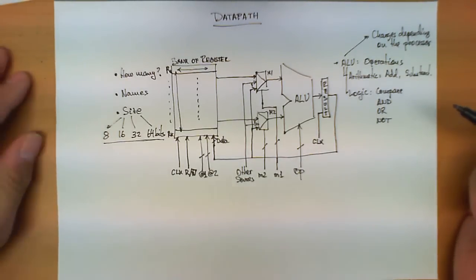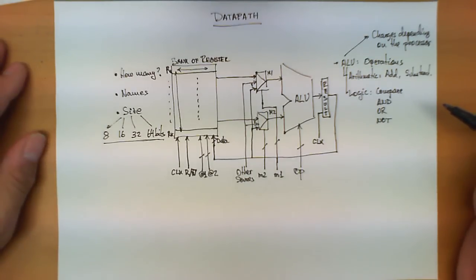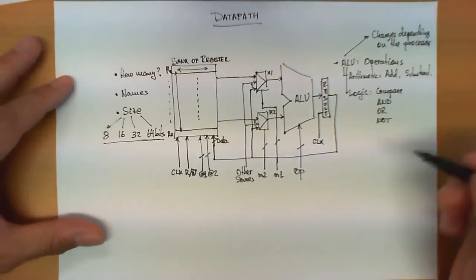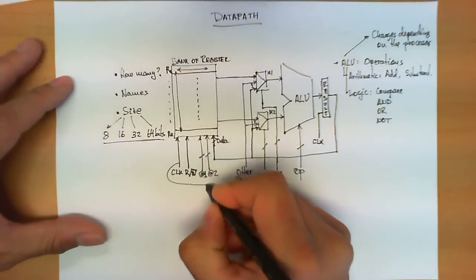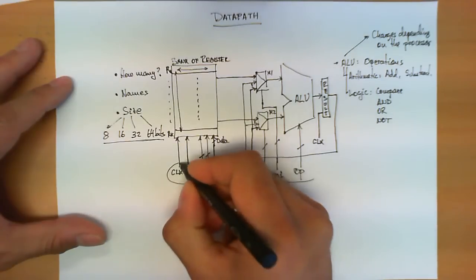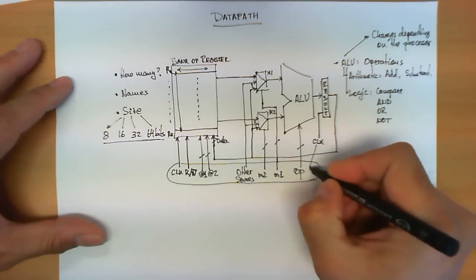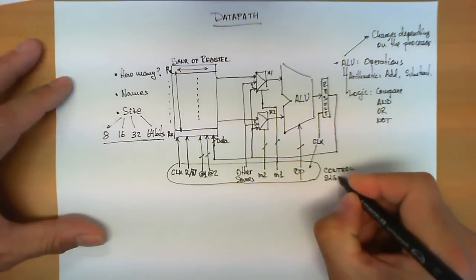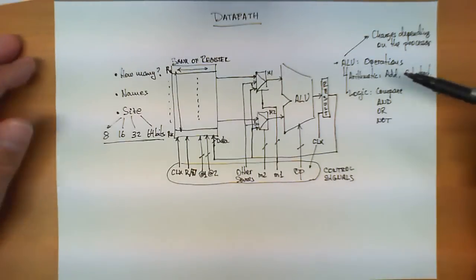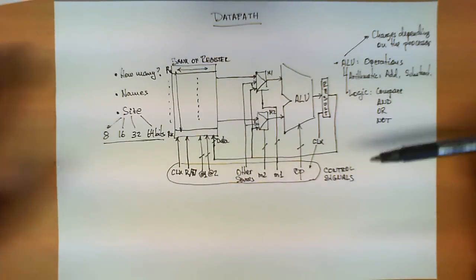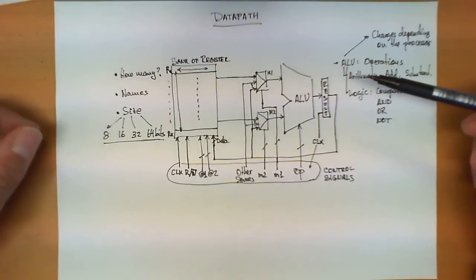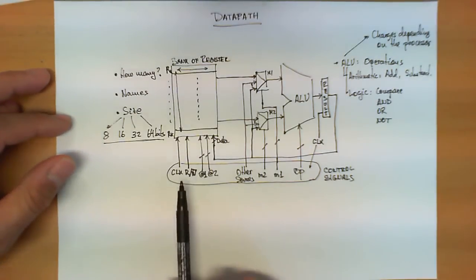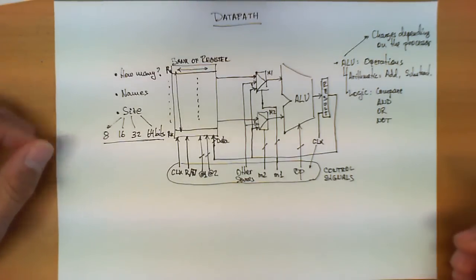So this is our initial data path — a simplified version. If we analyze it more closely, it can do a lot of interesting things. All these signals we have here, including the clock, are what we call control signals. Another way of looking at this data path is as a digital circuit capable of carrying out several operations, where the type of operations and the way results are stored depend on the values these control signals take over time.